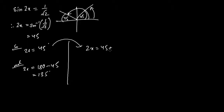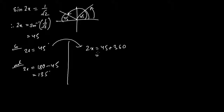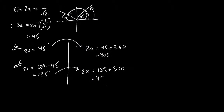Going around again, we add 360 degrees to each value: 2x = 45 + 360 = 405 degrees, and 2x = 135 + 360 = 495 degrees. So instead of two values we get four values because of the additional revolution.